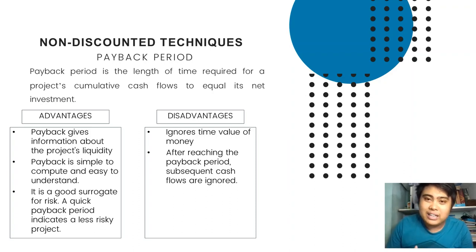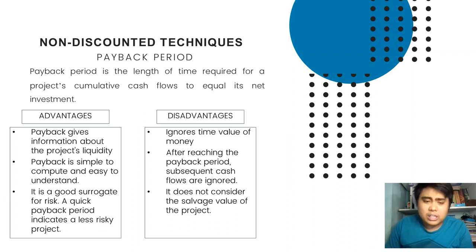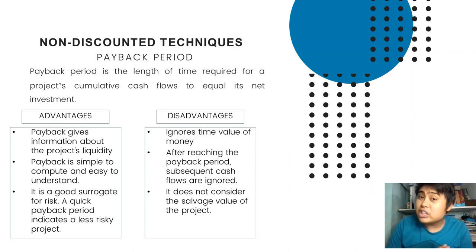Of course, payback also has disadvantages. Number one: it ignores time value of money, just like ARR. Number two: after reaching the payback period, subsequent cash flows are ignored — this is the key difference from ARR. In ARR, we use income over the entire life of the project. In payback period, the concern only goes from day zero until the payback period is reached. Number three: it does not consider the salvage value of the project — this is what differentiates payback from bailout period.